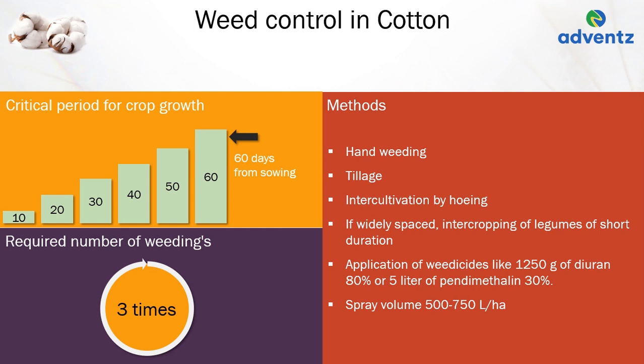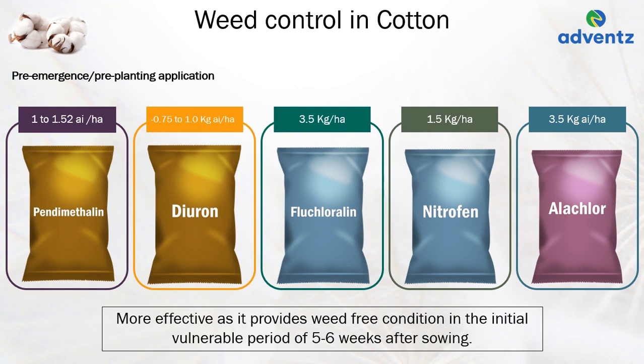During the pre-emergence or pre-planting stage, application of pendimethalin at the rate of 1–1.5 kg ai per hectare, or diuron at the rate of 0.75–1 kg ai per hectare, fluchloraline at the rate of 3.5 kg per hectare, nitrofen at the rate of 1.5 kg per hectare, or alachlor at the rate of 3.5 kg ai per hectare is more effective, as it provides weed-free conditions in the initial vulnerable period of 5–6 weeks after sowing.